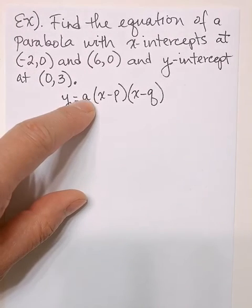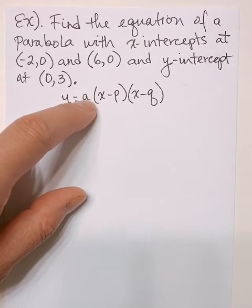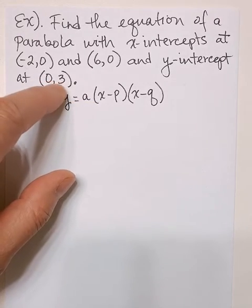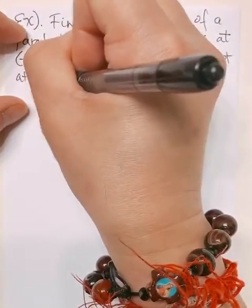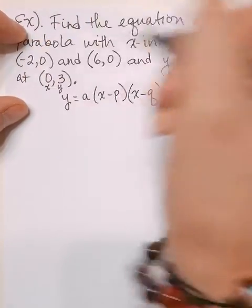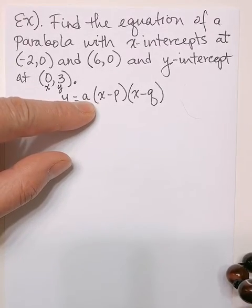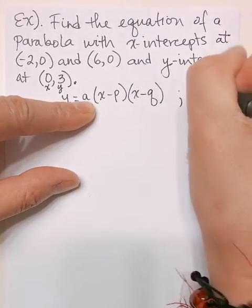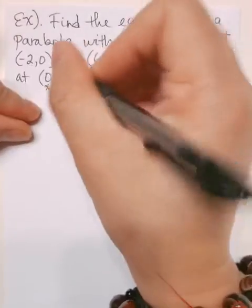We don't have an a value, which means we need to solve for a. That's where the y-intercept comes into place. The x value is 0, the y value is 3. We're going to substitute those two values to help us find the a value. It could be 1, but we don't know. Let's solve this.